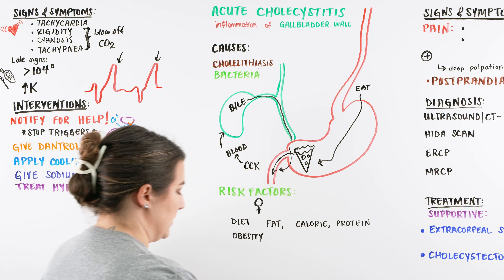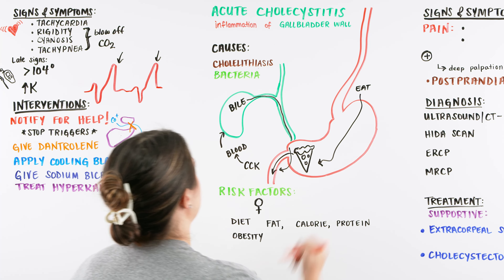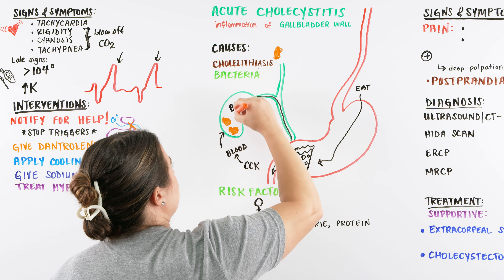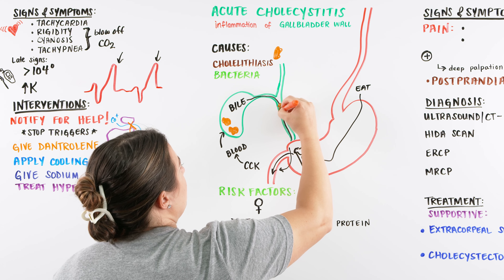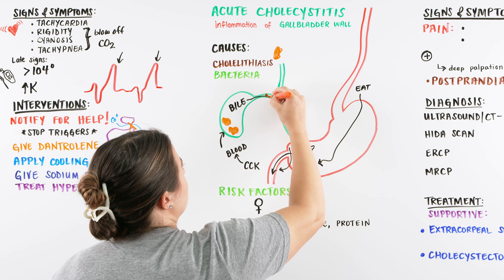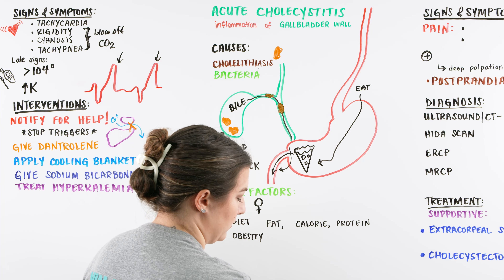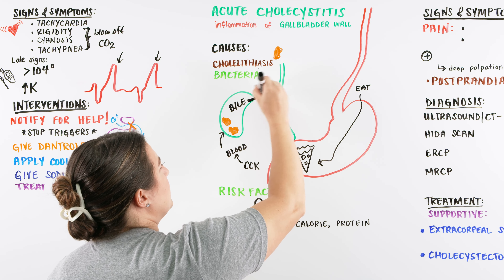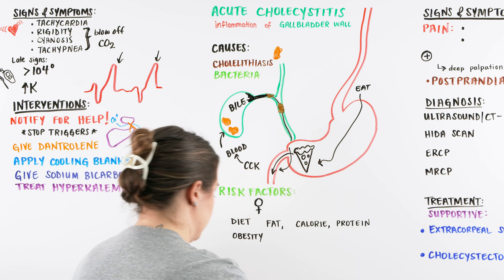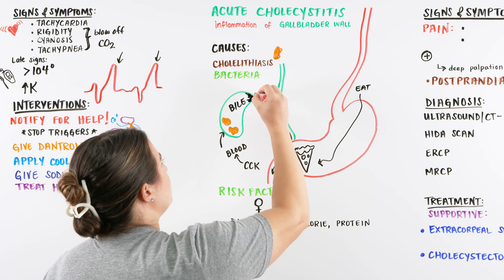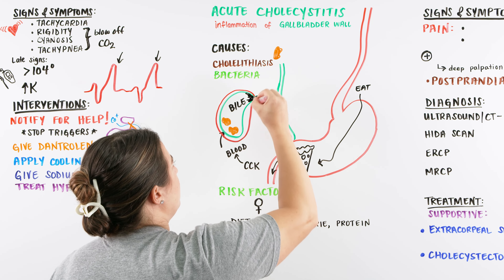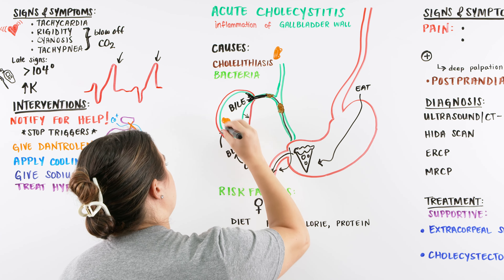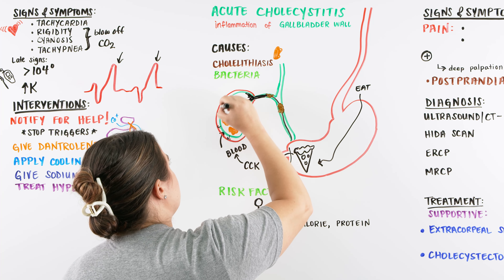But what happens when we have cholelithiasis — a gallstone that's been sitting in the gallbladder — and for some reason it travels and gets caught? Now we are stuck in our common bile duct or maybe the cystic duct. Different areas cause slightly different symptoms, but overall a very similar start. The bile now gets blocked, and when that bile gets blocked it starts to backflow, causing an increase in inflammation in the gallbladder. Our gallbladder starts to get inflamed and bigger, and we know that inflammation and irritation can cause pain. This is cholecystitis — inflammation of the gallbladder.